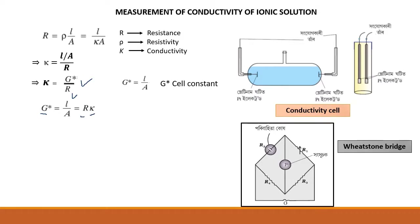R4 or R3 are fixed resistances. R1 is also fixed, and R2 is adjustable or variable resistance. I will adjust the variable resistance, and then I will adjust this. What is happening now? When balance is achieved, I will adjust the variable resistance accordingly.